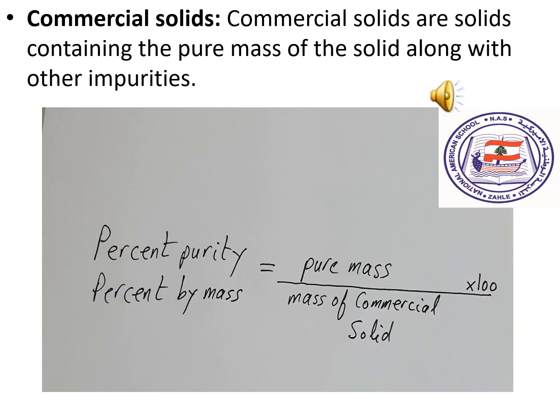Commercial solids contain the pure mass of the solid along with other impurities. For example, a commercial solid labeled 90% purity means that in 100 grams of the solid, you have 90 grams of the pure product. The percent purity of a commercial solid is simply the pure mass divided by the mass of the commercial solid, times 100.